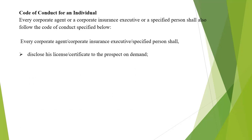First, it is the duty of the agent to disclose his or her license certificate to the prospect on demand. The prospect is the person who is going to buy the insurance — we cannot call them a policy holder yet as they may accept or may not accept the insurance contract. If the prospect asks for your license, you must have it with you and must disclose it to the prospect.